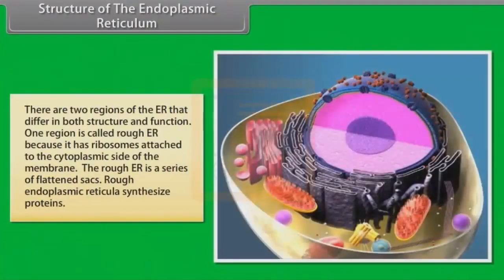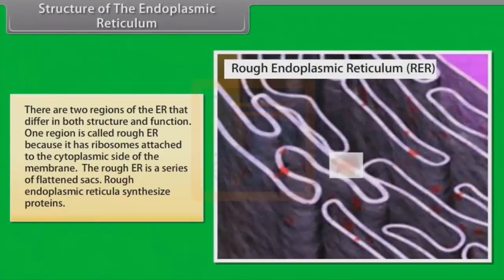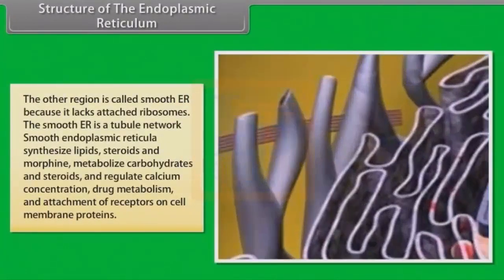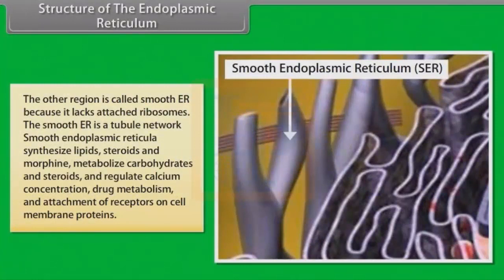There are two regions of the ER that differ in both structure and function. One region is called rough ER because it has ribosomes attached to the cytoplasmic side of the membrane. The rough ER is a series of flattened sacs; rough endoplasmic reticula synthesize proteins. The other region is called smooth ER because it lacks attached ribosomes. The smooth ER is a tubule network. Smooth endoplasmic reticula synthesize lipids, steroids and morphine, metabolize carbohydrates and steroids, and regulate calcium concentration, drug metabolism and attachment of receptors on cell membrane proteins.